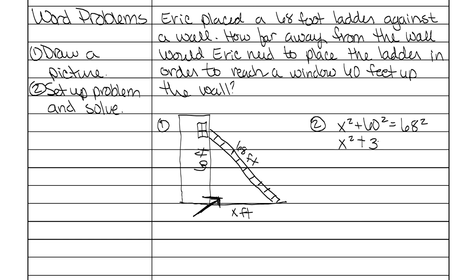60 squared is 3600. 68 squared is 4624. We need to subtract 3600 from both sides. And so this is x squared. 4624 minus 3600 leaves me with 1024. Take the square root of both sides. And whenever you take the square root of 1024, it is 32. So don't forget your units, it's 32 feet. Make sure you go to the bottom and write your summary, and notes are finished.